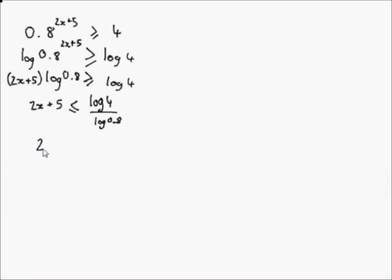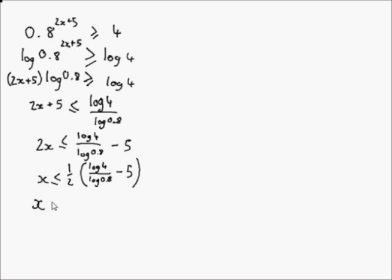Now we can get the x's on their own. 2x less than or equal to log 4 over log 0.8 minus 5, and then x is less than one half of log 4 over log 0.8 minus 5. Again, a calculator then tells me that to 3 significant figures this is less than 5.61.